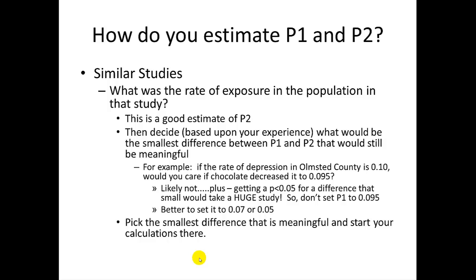Then, decide, based upon your experience, what would be the smallest difference between P1 and P2 that would still be meaningful. For example, if the rate of depression in Olmstead County is 10%, would you really care if chocolate consumption decreased it to 0.095? Likely not. Plus, getting a p less than 0.05 for a difference that small would take a very large study. So, don't set P1 to 0.095. Better to set it to something like 0.07 or 0.05. Basically, you want to pick the smallest difference that's meaningful and begin your calculations with those numbers.